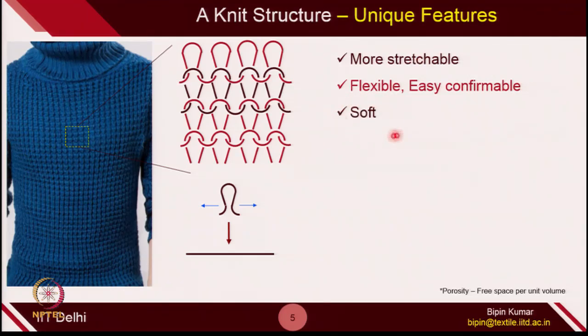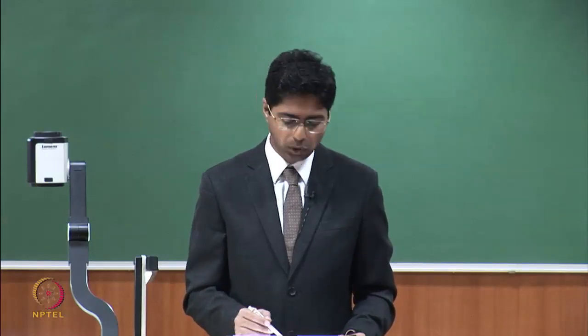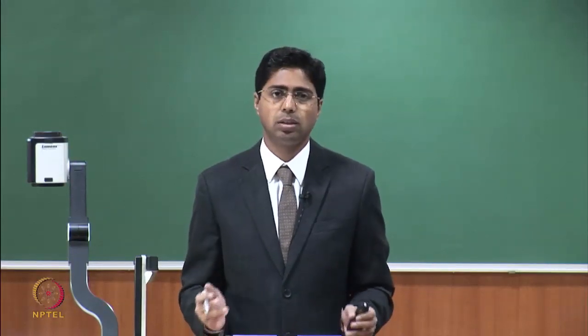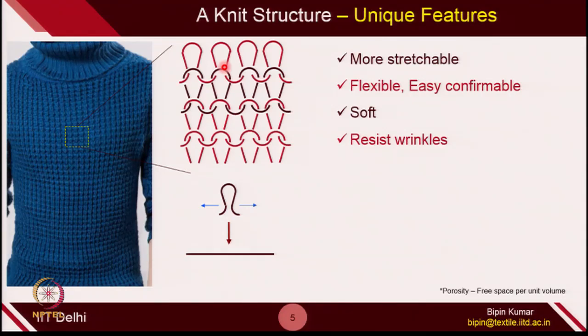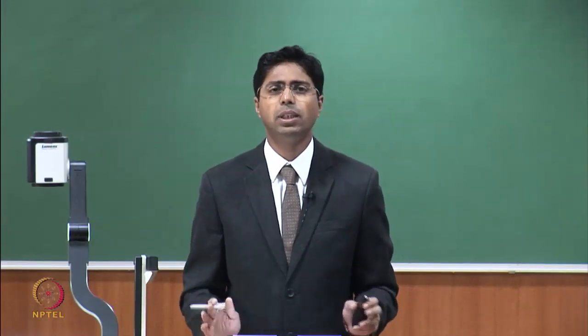You will also feel that when you use any t-shirt compared to a shirt, it feels very, very soft. The softness actually comes from the flexibility and stretchability. Also, the type of yarn used in making these structures are comparatively soft yarns — or you can say low-twisted yarns — which in general gives the soft feeling for these types of fabrics. That's why we prefer in daily routine to use t-shirts as casual wear. The other beautiful thing about knitting is it resists wrinkles. Compared to a shirt, you need to iron it properly before you use it. But in the case of t-shirts, it can resist wrinkles, so it needs very limited amount of ironing.